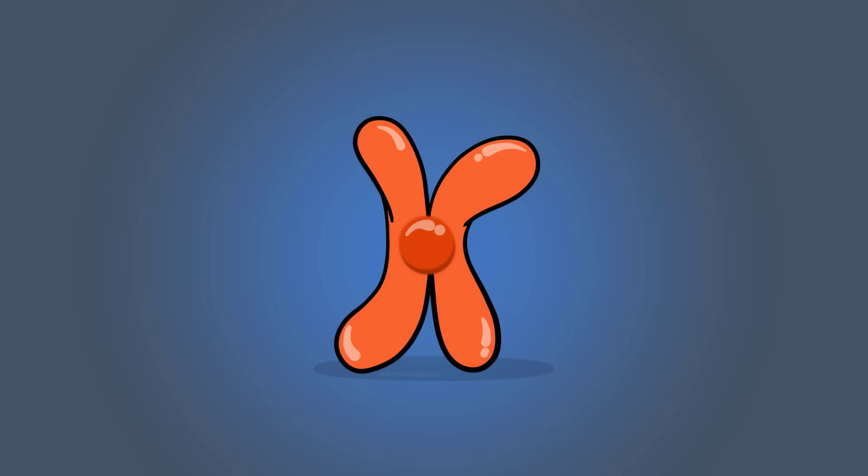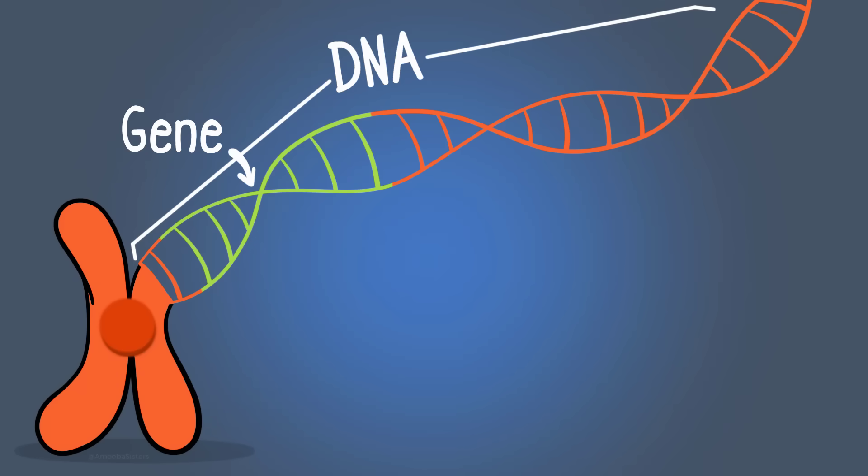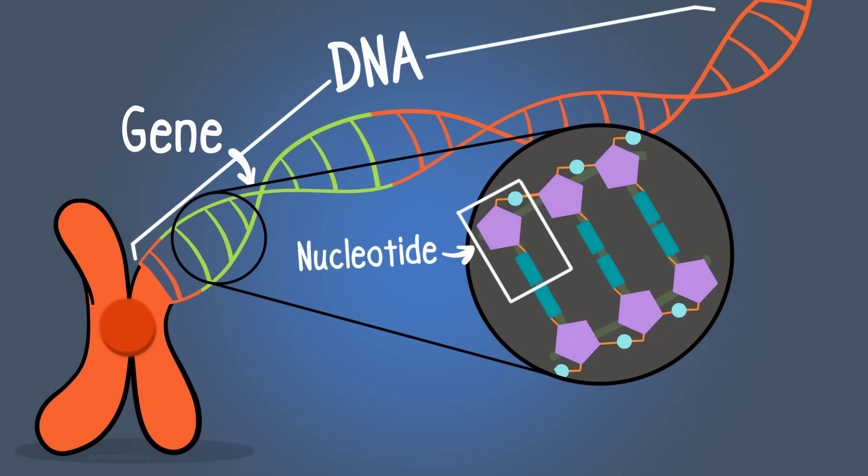So let's do a recap of the big picture. Here's a single chromosome. You see genes on this chromosome. These genes consist of portions of DNA. DNA is made up of nucleotides and it's these bases here, the sequence of them, that makes the difference in coding for traits.